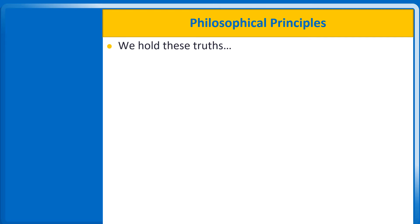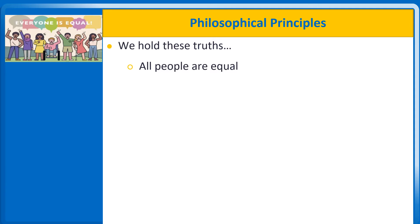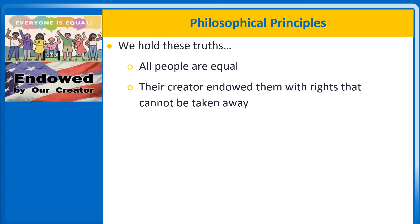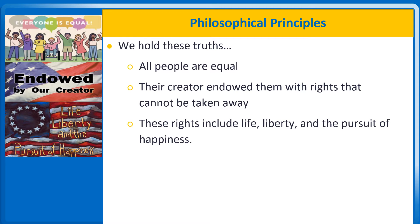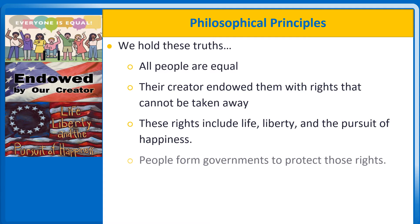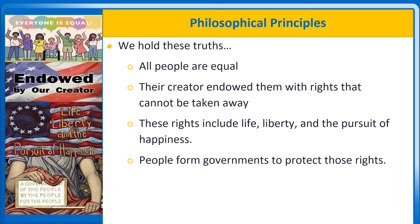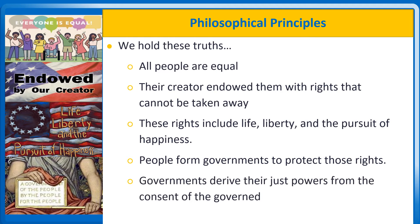In one elegant paragraph, the Declaration of Independence distills America's political philosophy into five towering ideals: all people are equal; their Creator endowed them with rights that cannot be taken away; these rights include life, liberty, and the pursuit of happiness; people form governments to protect those rights; and governments derive their just powers from the consent of the governed.